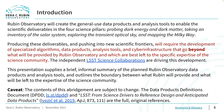However, producing the expected LSST science deliverables and pushing into new scientific frontiers will also require the development of specialized algorithms, data products, analysis tools, and cyber infrastructure that go beyond what will be provided by Rubin Observatory. This considerable amount of work is best left to the specific expertise of the science community. The independent LSST science collaborations are driving this development. This presentation outlines the boundary between what Rubin Observatory will provide and what will be left to the science community.